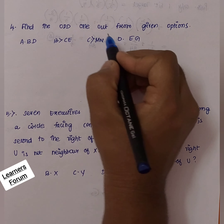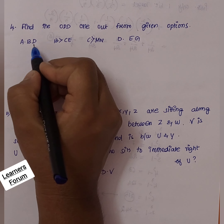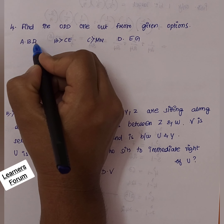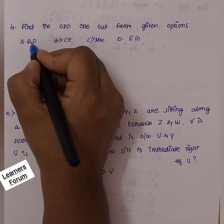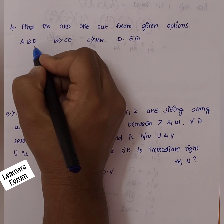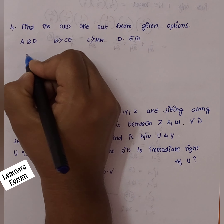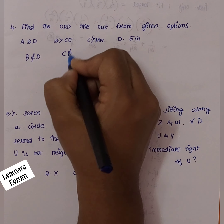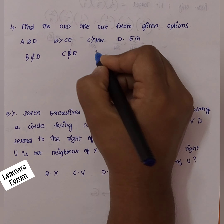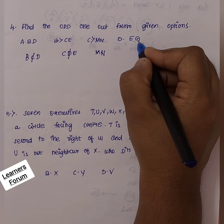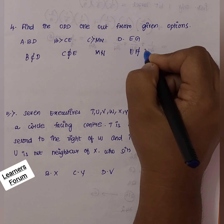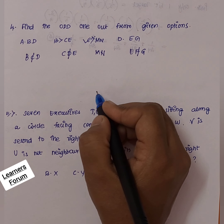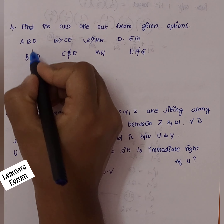Next question: find the odd one out from the given options. The options provided are BD, CE, MN, EG. Observing the pattern: B and D — the next alphabet C is skipped and D is taken. C and E — D is skipped and E is taken. E and G — F is skipped and G is taken. These all follow the same pattern of skipping one letter.